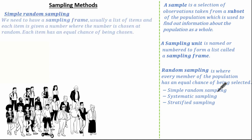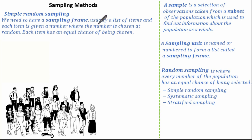Let's have a look at simple random sampling. Simple random sampling means we need to have a sampling frame — usually a list of items — and each item is given a number or name where the number or name is chosen at random. Each item has an equal chance of being chosen.